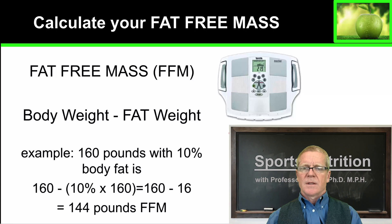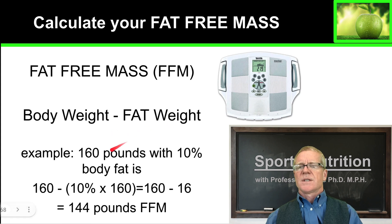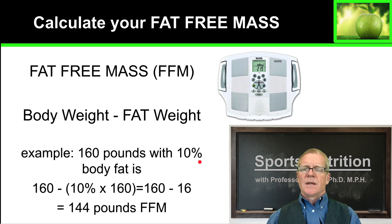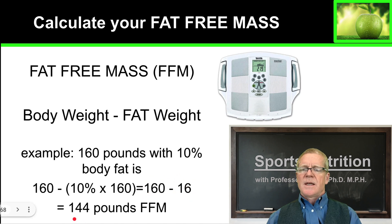Work out the percentage of body fat. Once you have that percentage, you can take your body weight and subtract the weight of the fat. For example, if I'm 160 pounds and I have 10% body fat, 10% of 160 is 16. So 160 pounds minus 16 pounds of fat means I have 144 pounds of fat-free mass.